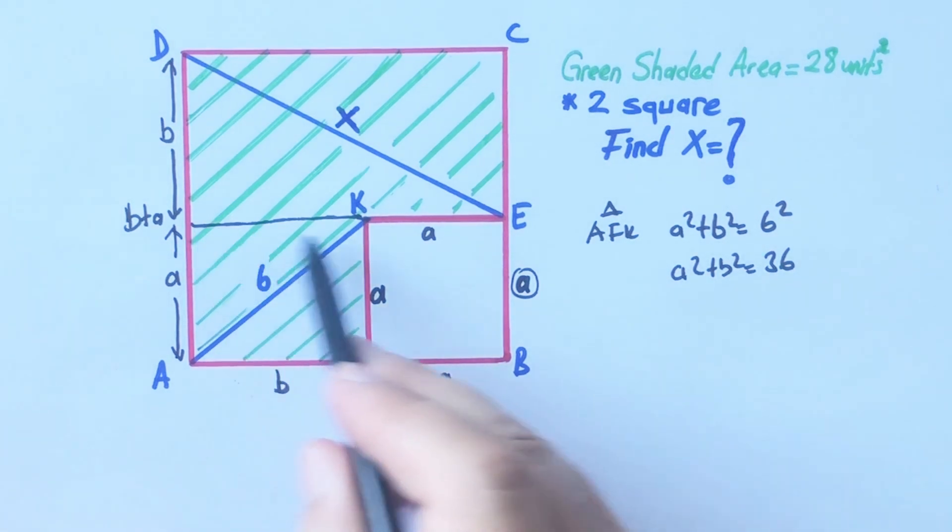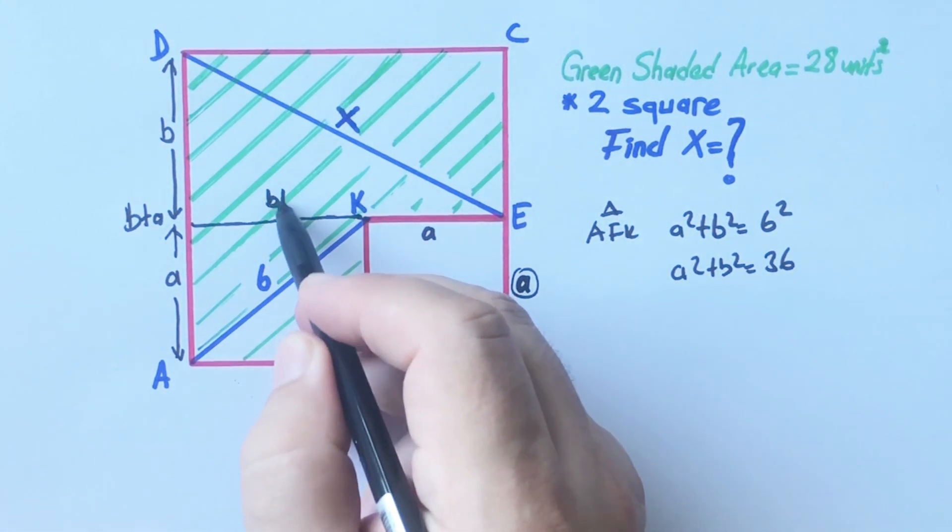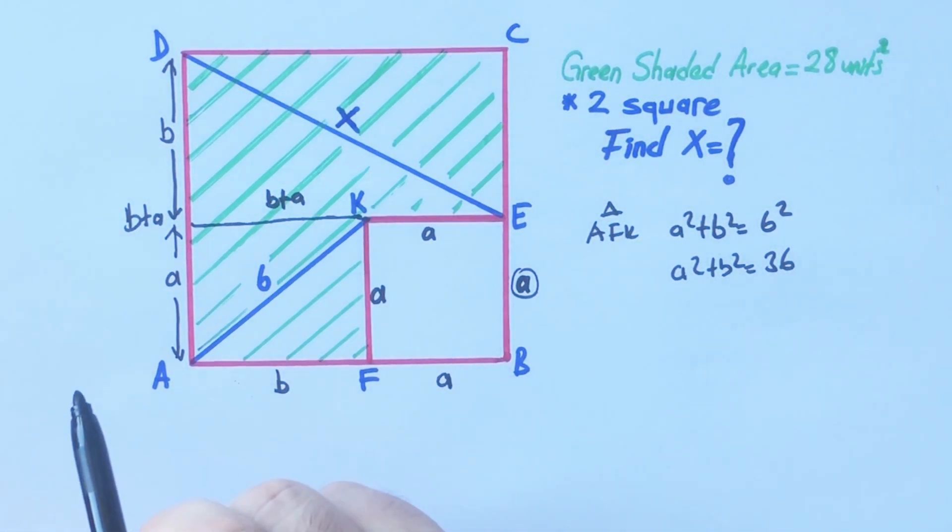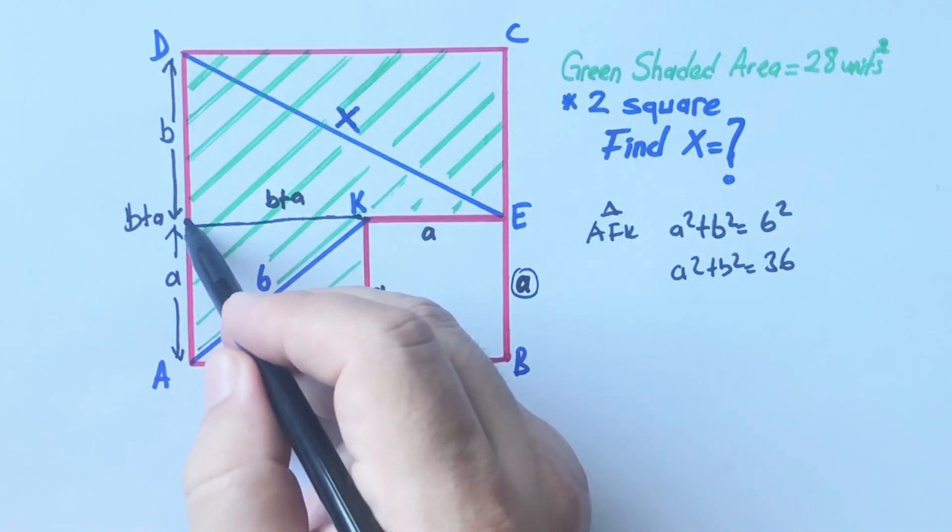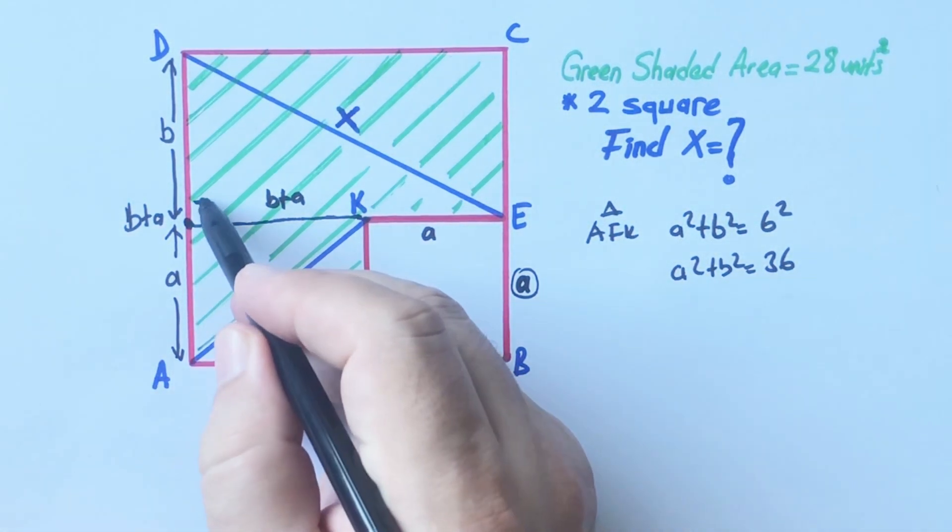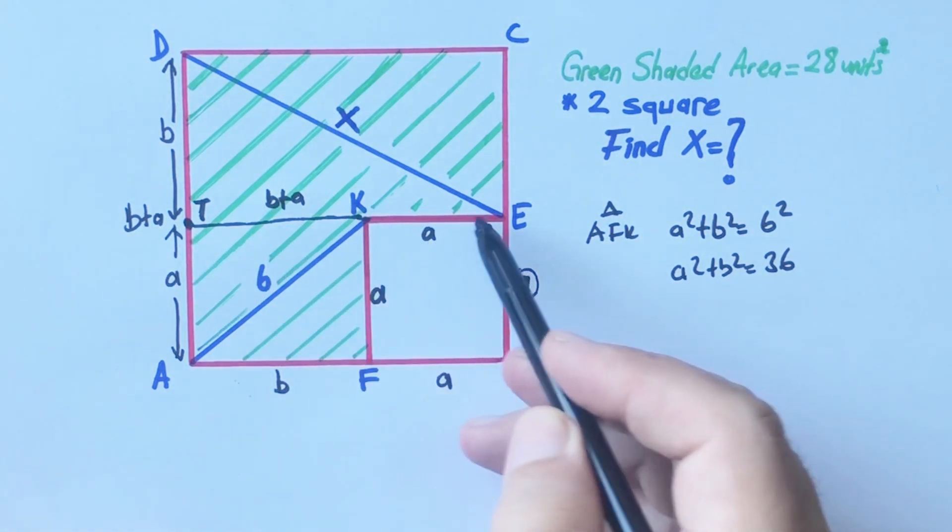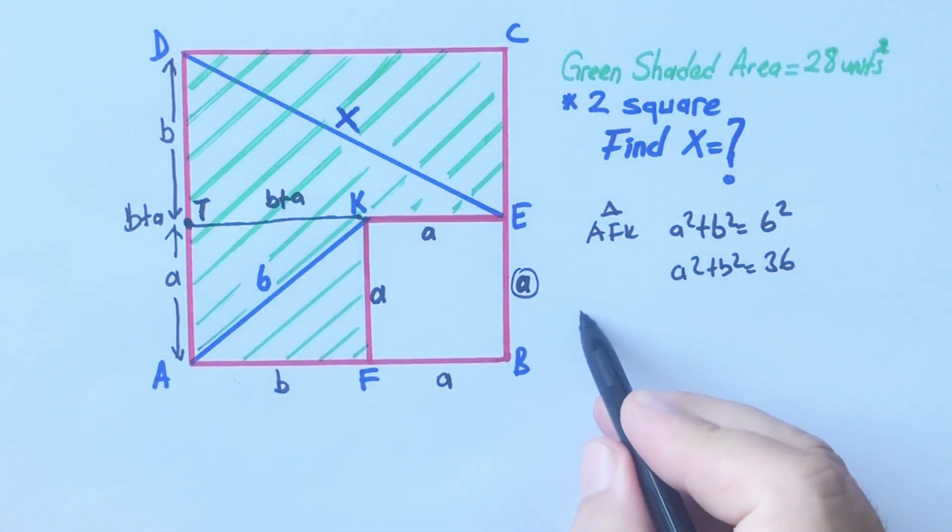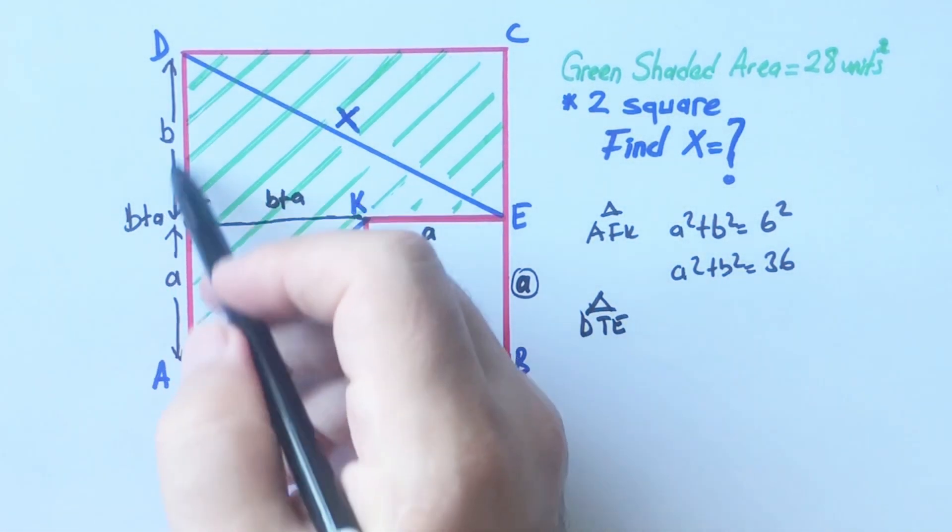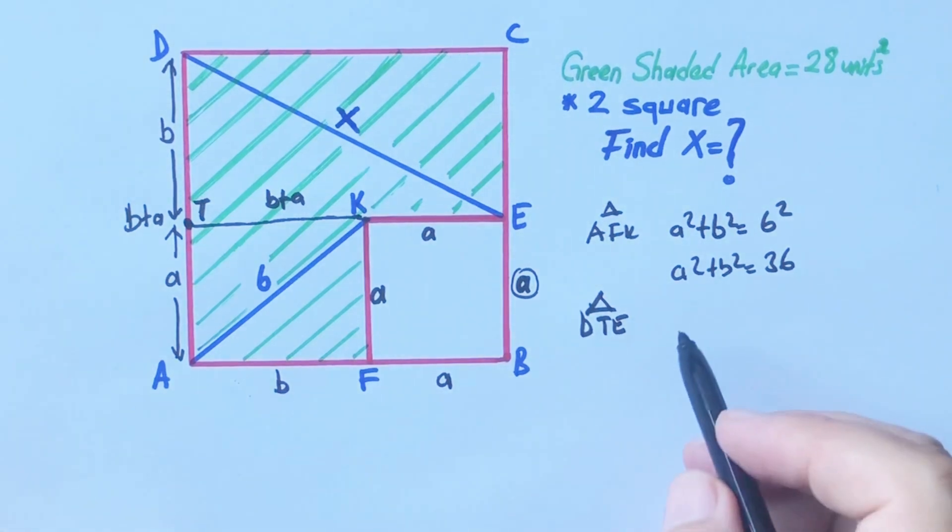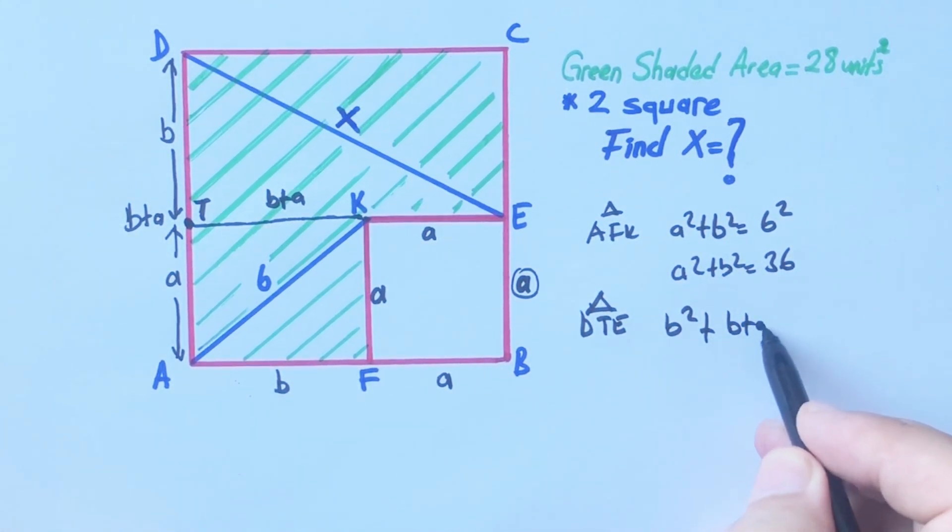Therefore if here is b plus a, this length must be b plus a. Let's call this point T. For this triangle, if we apply Pythagorean theorem again, b squared plus b plus a whole squared equals x squared, right?